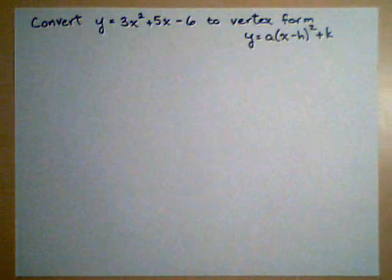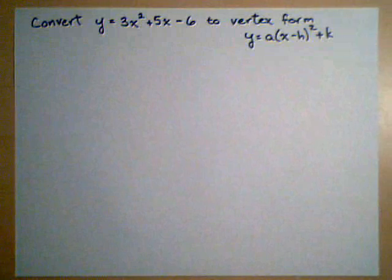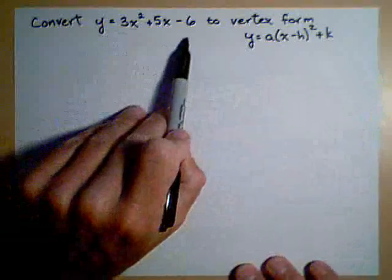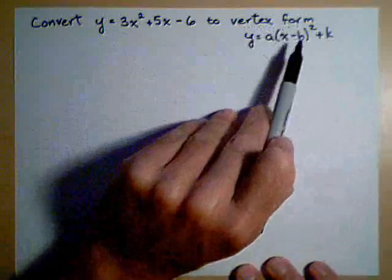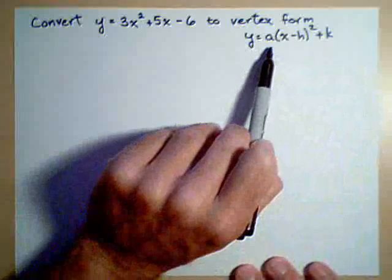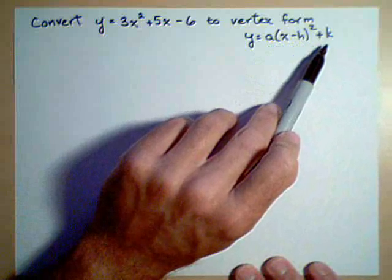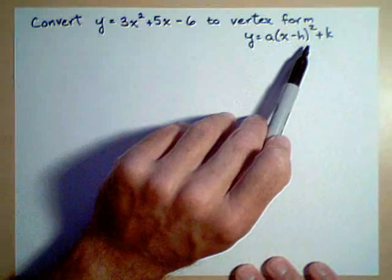In this video, we're going to look at a little bit more difficult example of converting a quadratic in general form to what is known as vertex form, or the standard form, a times the quantity (x - h) squared plus k. And then we'll talk about identifying the vertex from there.